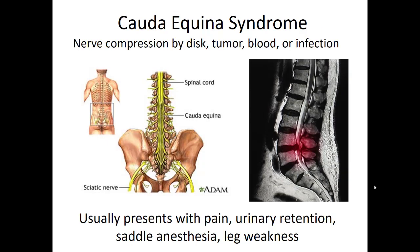Positive answers to those questions make me very worried that these patients might have a surgical emergency called cauda equina syndrome. This is a nerve compression by a disc that is protruding and pushing on the nerve, cutting off function to the point where the patient can't urinate, has lost bowel or bladder control, or can't walk. That pressure on the nerve needs to be relieved, or the patient's symptoms are only going to get worse. Losing control of your bladder or bowels for the rest of your life is a profoundly debilitating problem, and this is a surgical emergency that needs to be evaluated quickly.